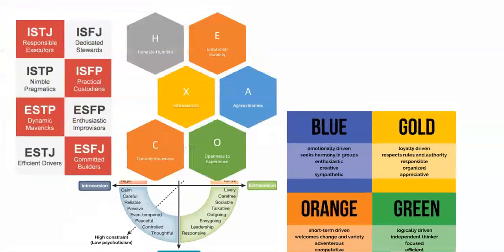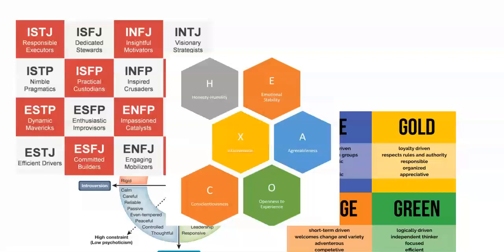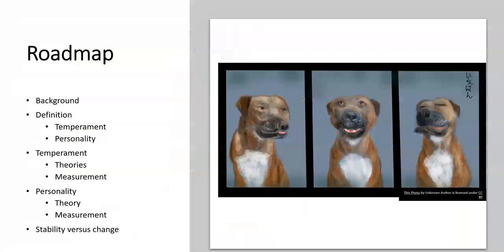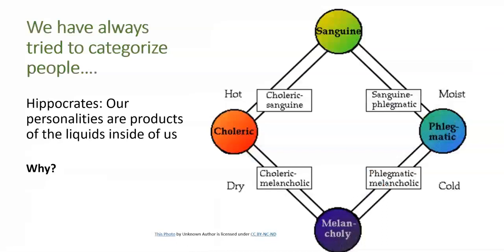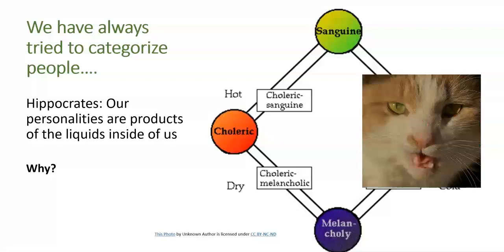What is personality? Is it stable, or do we change over time? How accurate are personality tests, and what is the difference between temperament and personality? In today's video we will define and go over the difference between temperament and personality, as well as how each of these are measured. Even Greek philosophers argued that people fell into some sort of personality groups. Hippocrates, for example, believed that the liquid inside of us determined our personalities. Since then, psychologists have continued to explore the question of what makes us who we are — because understanding traits allows us to predict and understand behavior better.